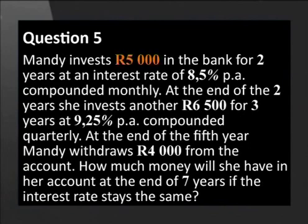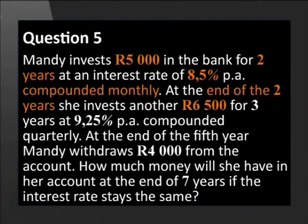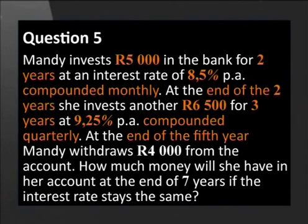Mandy invests R5000 in the bank for two years at an interest rate of 8.5% per annum compounded monthly. At the end of the two years, she invests another R6500 for three years at an interest rate of 9.25% per annum compounded quarterly. At the end of the fifth year, Mandy withdraws R4000 from the account. How much money will she have in her account at the end of seven years if the interest rate stays the same?